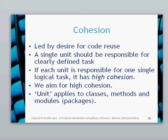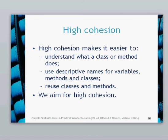With high cohesion, you can take one of your classes out of your project and use it in another project — that would be a highly cohesive class as part of a highly cohesive project, and we aim for this. Units can apply to classes, methods, and packages. High cohesion makes it a lot easier to understand what a class or method does. You can document it saying 'this class does X', rather than 'this class does X with help from Y and a bit of Z'.